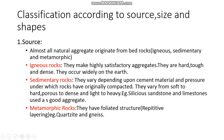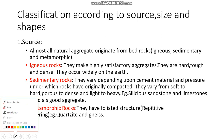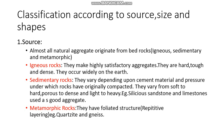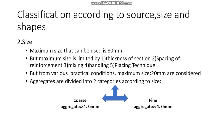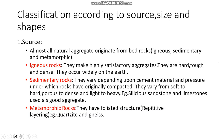Third are metamorphic rocks. They have a foliated structure. Foliated structure means a layered structure — the material is arranged in repetitive layers. This kind of layer structure is known as foliated structure. Examples include various metamorphic rock types.